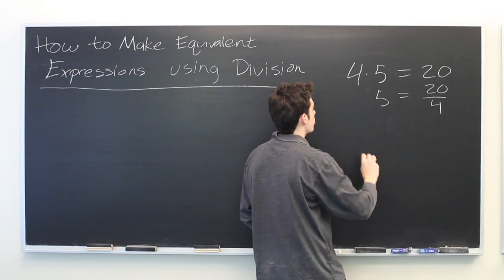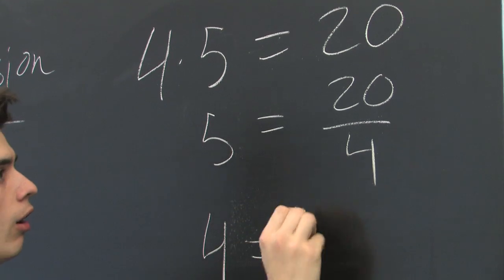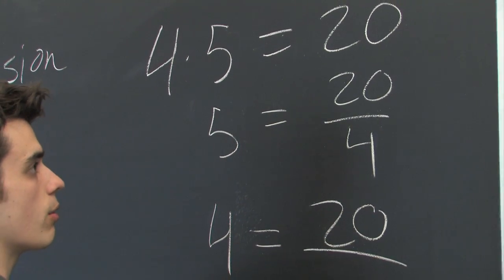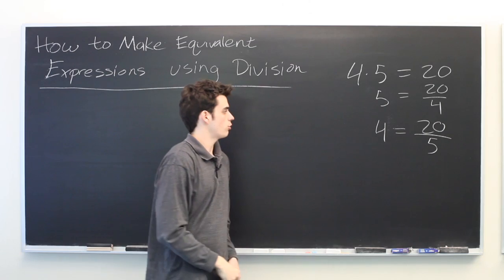Or we can divide the original equation by 5 and we get 4 is equal to 20 divided by 5 which is also true.